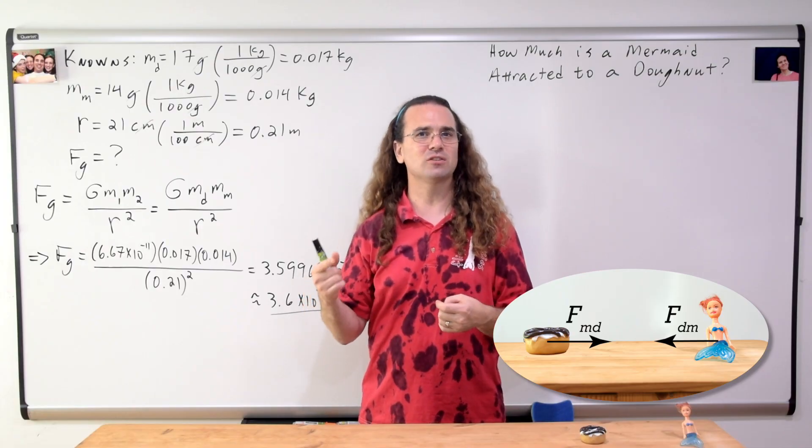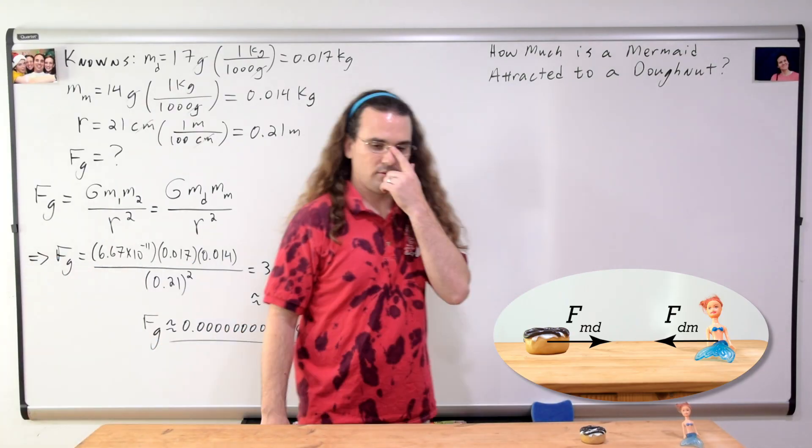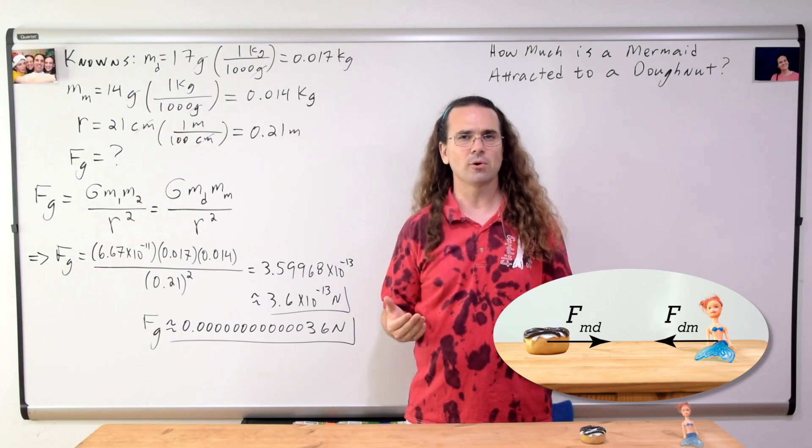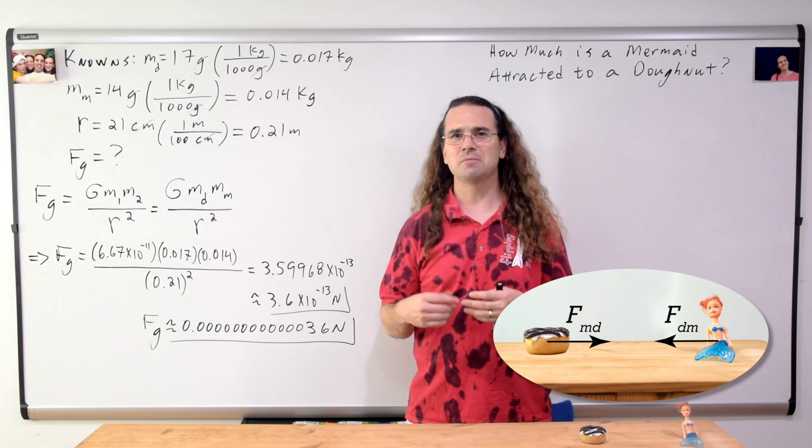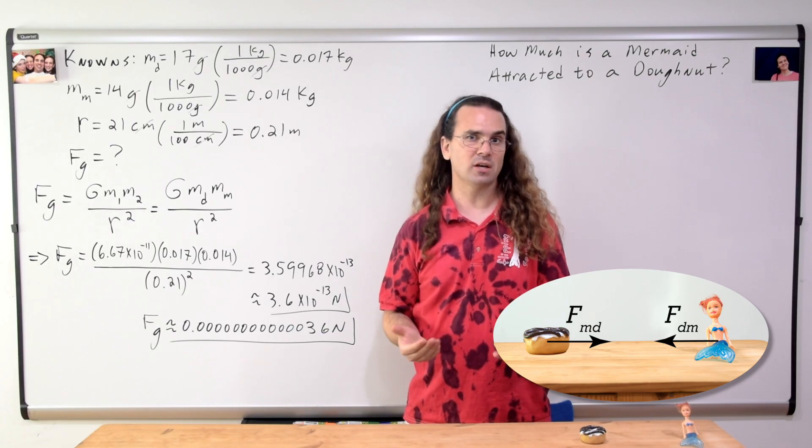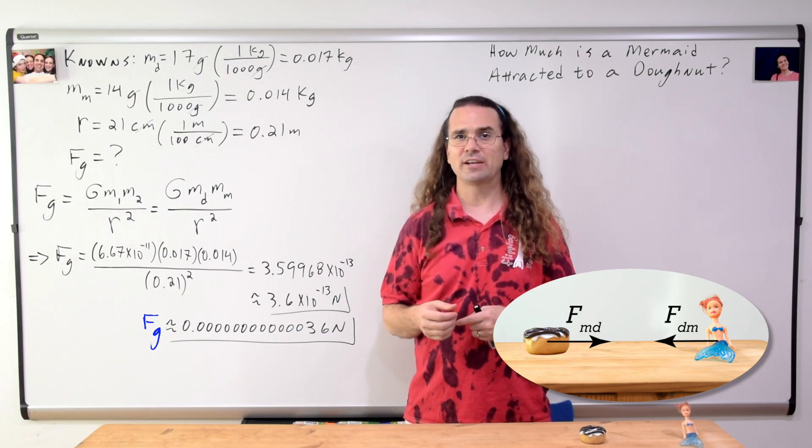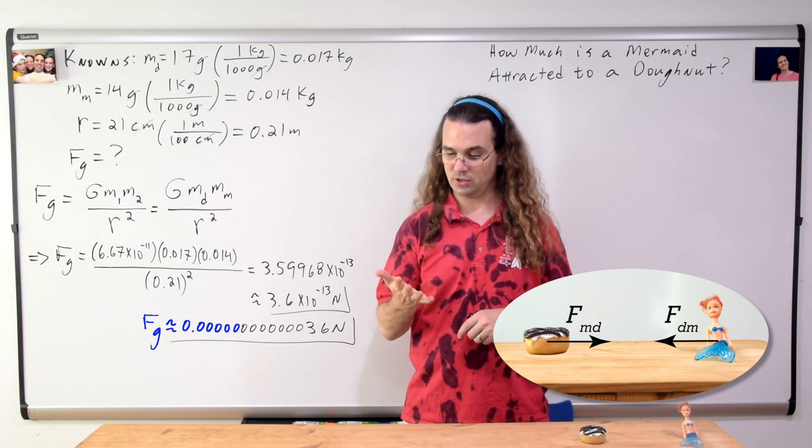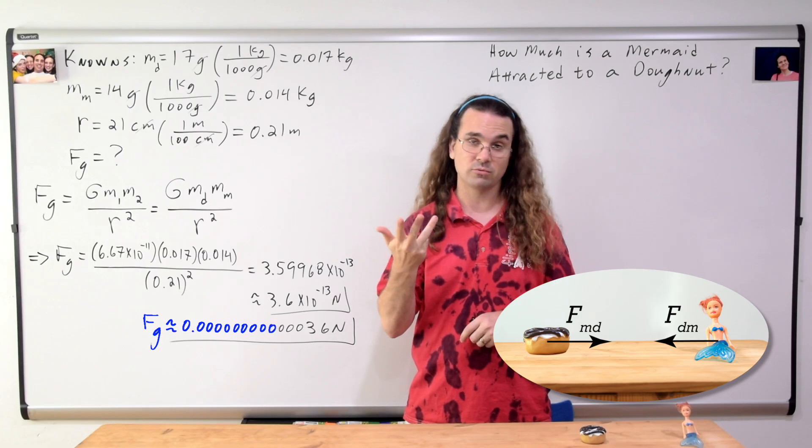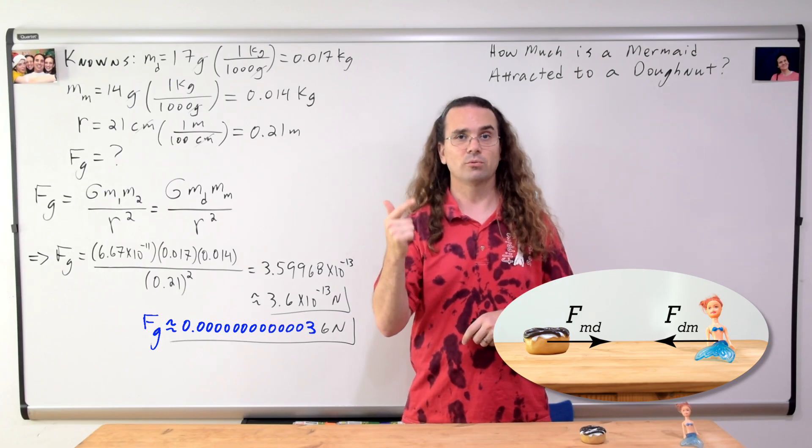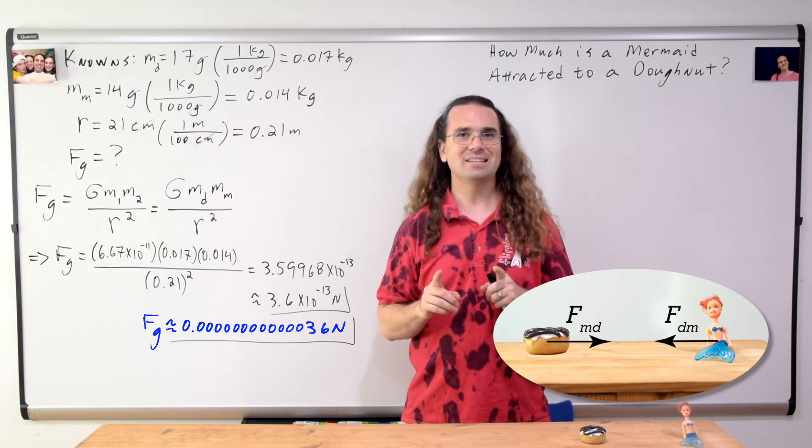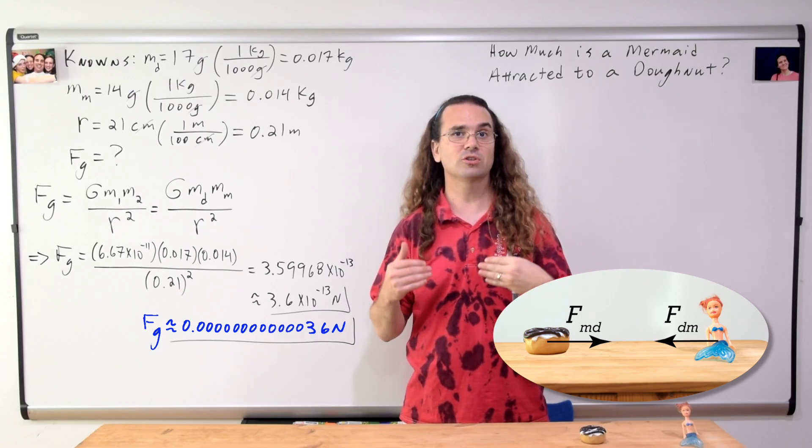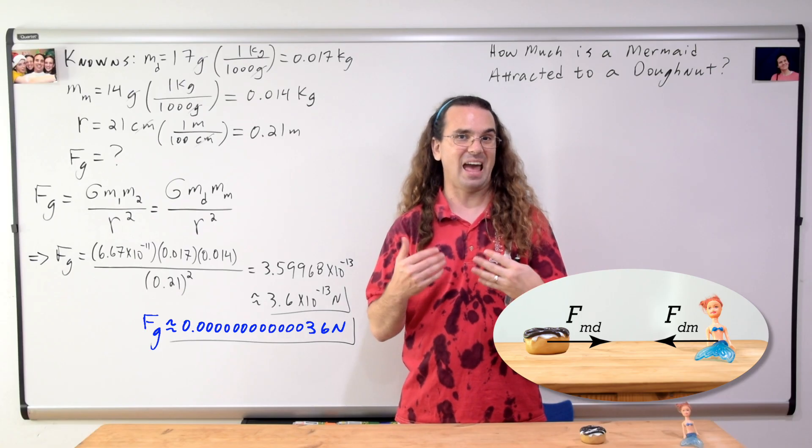Look at the size of this force of gravitational attraction. Scientific notation is great for easily writing down numbers with lots of zeros. However, sometimes they can mask the actual size of the number. The force of gravitational attraction between the mermaid and the donut is 0.00000000000036 Newtons. That is a very small force, which will definitely not overcome the force of static friction, which is acting on the objects.